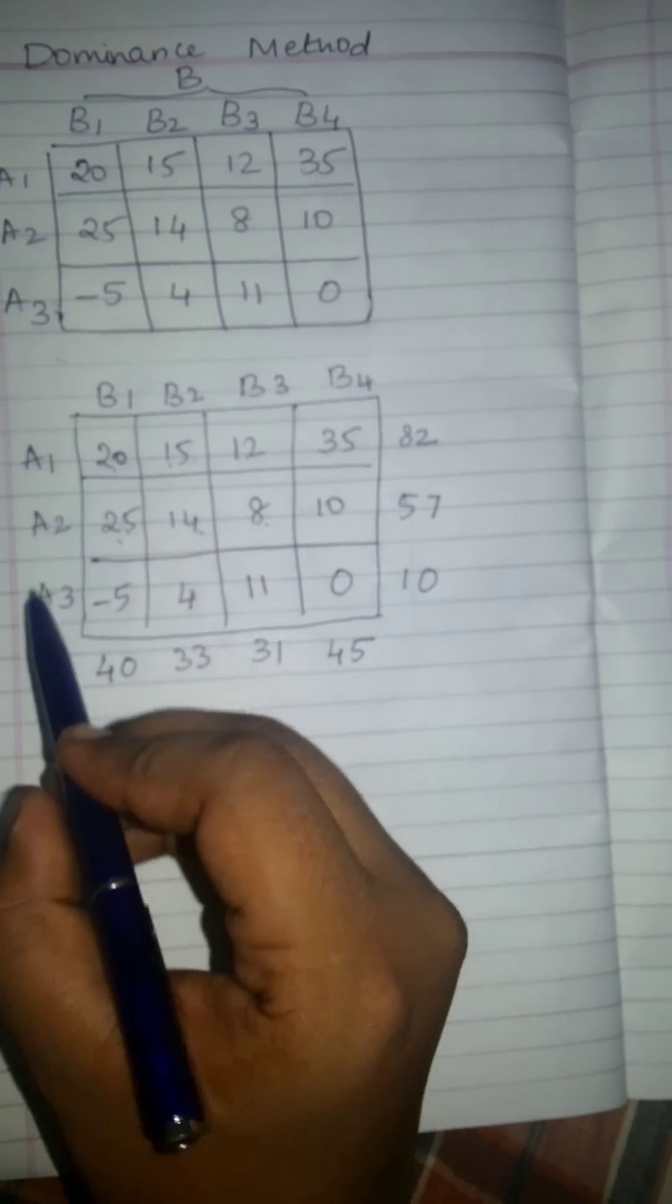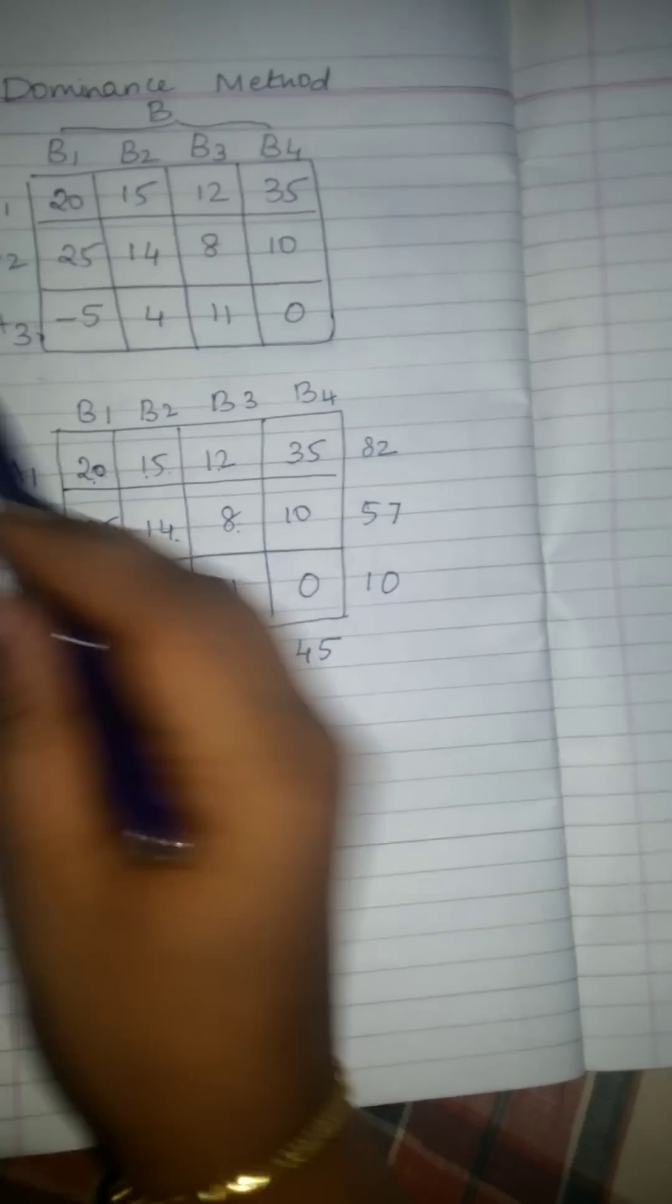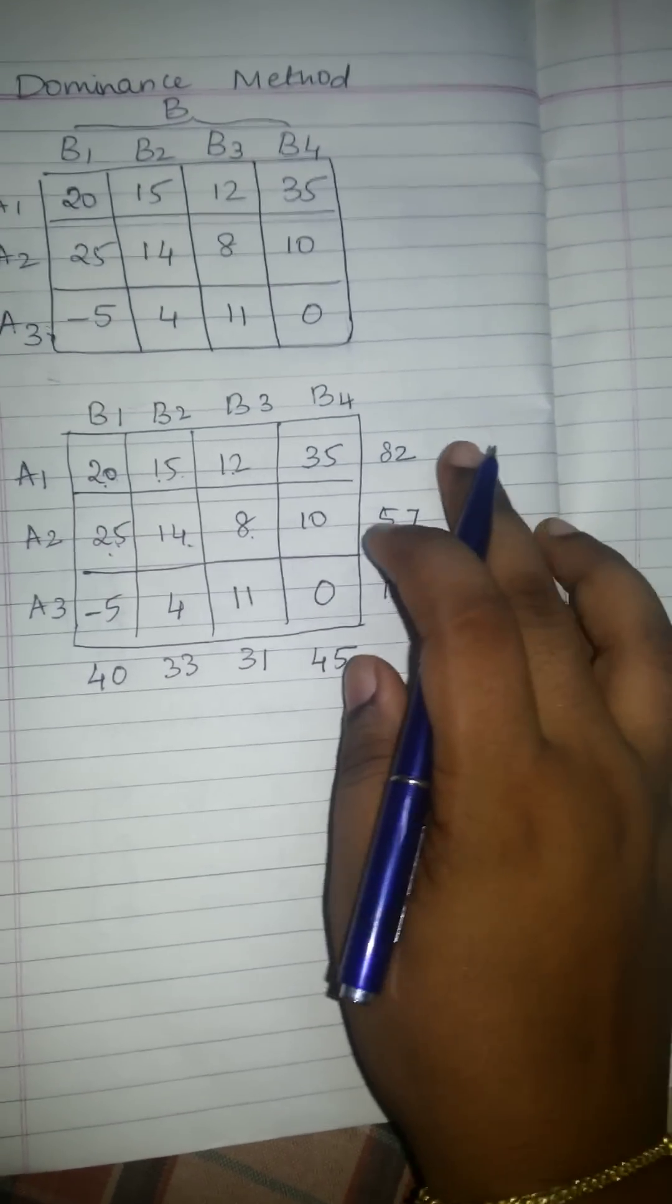Now, as I told first, the A, that is row, will try to retain the maximum value at the end of the answer. According to that, here the minimum value we are going to strike out first to retain the maximum value at the end of the answer. Here the least value in the row is 10. So what I am going to do is, I am just going to strike this row.